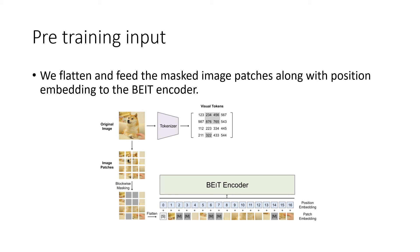We perform blockwise masking using the algorithm outlined previously, then flatten the patch embedding and add a position embedding to it. This is our input to our BEIT encoder. Just as in the vision transformer, we add an extra patch plus position embedding at position 0, as outlined in the figure.